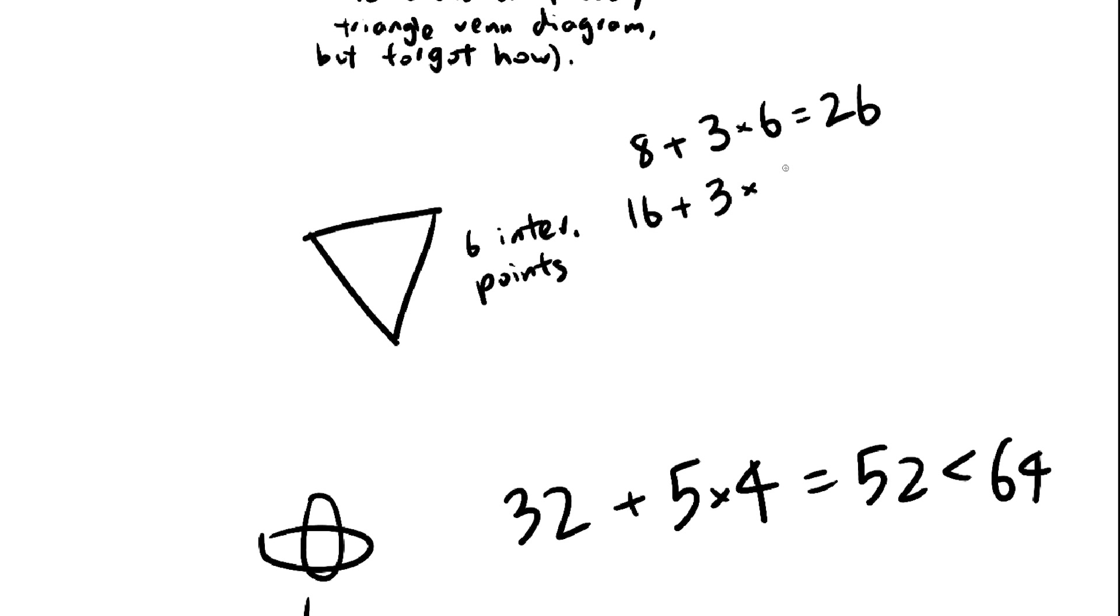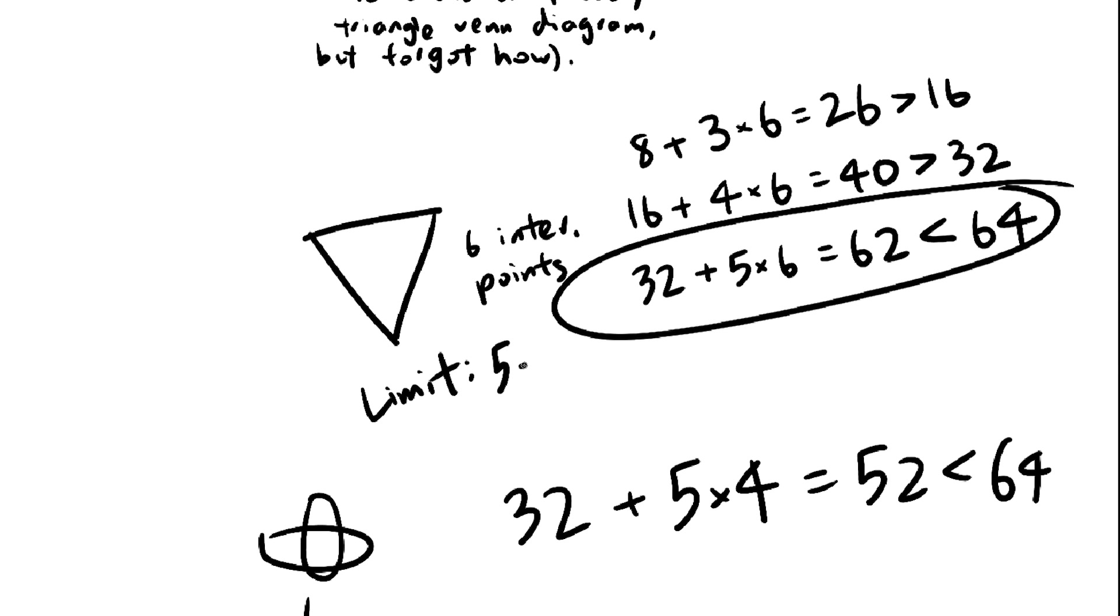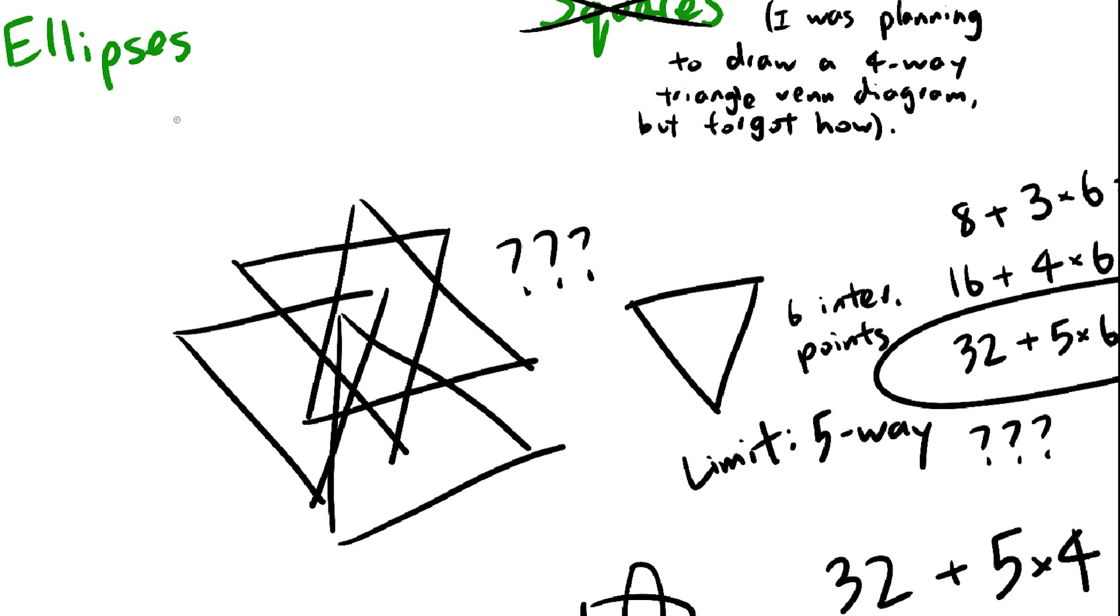Now let's look at triangles. If we do some math, we also get that the limit is 5-way. But is it really? I haven't been able to find a 5-way Venn diagram.